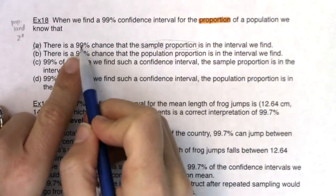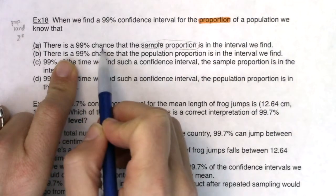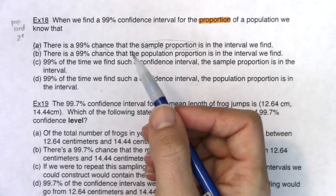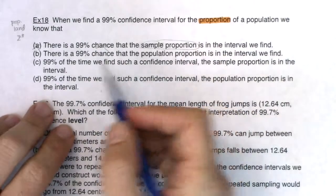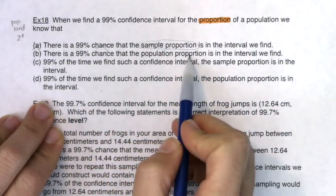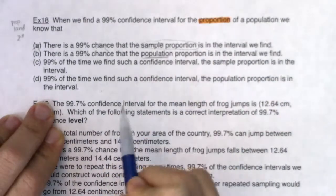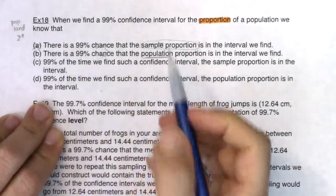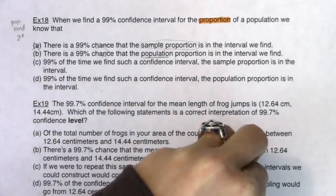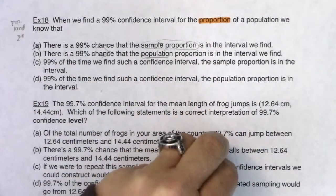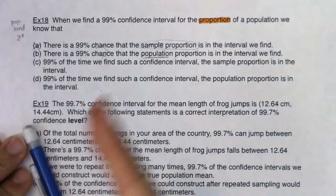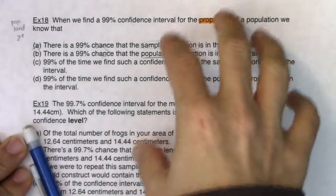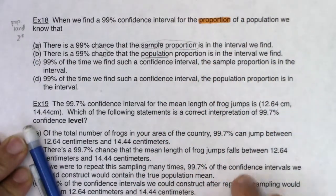We take our sample proportion, add a margin of error to get an upper bound, subtract a margin of error to get a lower bound, but always dead center is your statistic — your point estimate. So that sentence is wrong just based on the fact that it says 'sample proportion.' The other issue is this '99% chance': the 99% is not referring to your one individual interval. It refers to what happens if you take repeated samples and construct repeated intervals.